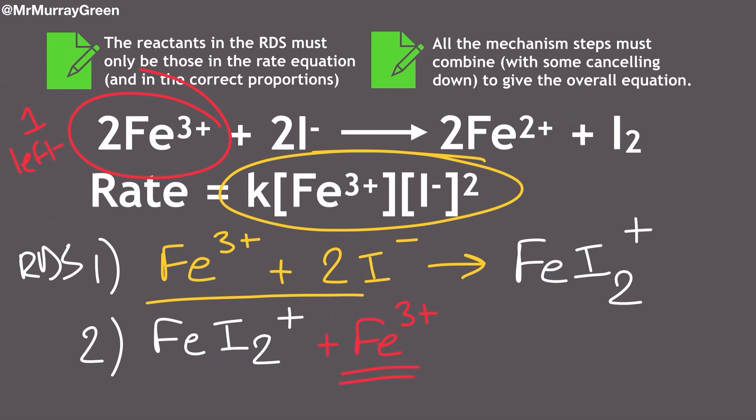Now the products here is nice and easy. All I need to use are all the products from the overall reaction equation. I've not made any of them yet, and I don't need to consult the rate equation for this. So here you can see my products are the iron-2 ions and the iodine. If I look at the second fact that's at the top of the screen, all the mechanism steps need to cancel down and they need to combine together to give the overall equation.